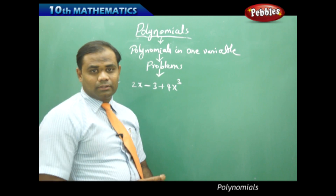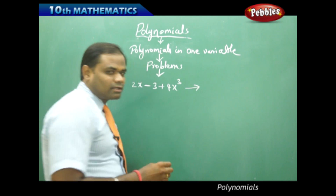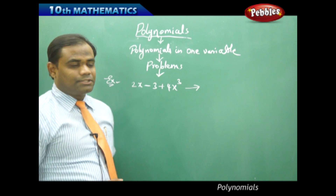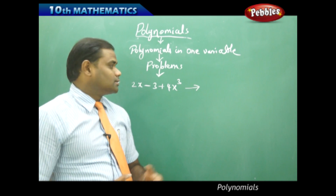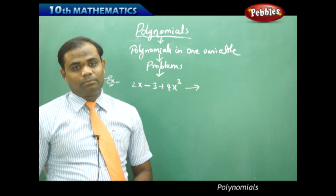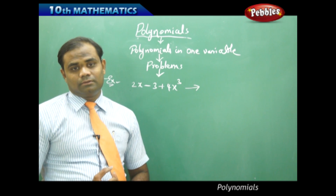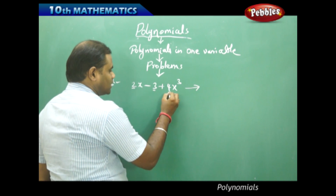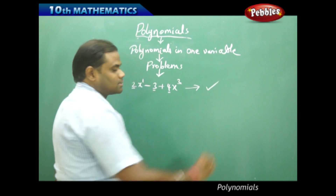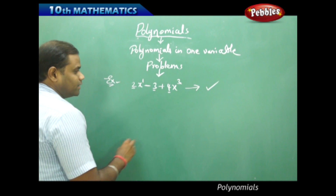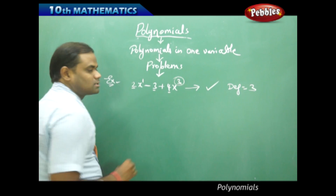This is an algebraic expression, so let us identify if it is a polynomial. The first check is whether each power of x is a non-negative integer. If they are non-negative integers, then the expression is a polynomial. We also check that the coefficients are real. In this case, each of the coefficients are real and each of the powers are non-negative integers. Therefore, this is a polynomial of degree 3 because the highest power is 3.